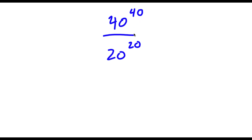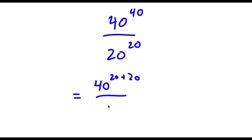Alright, so I have 40 to the power of 40 over 20 to the power of 20. Now to start, I can rewrite this as 40 to the power of 20 plus 20, over 20 to the power of 20. So all I did was rewrite 40 as 20 plus 20, because 40 is equal to 20 plus 20.